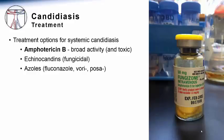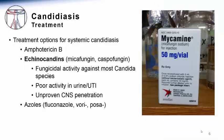Many of the major antifungal agents have potent activity against Candida species. One of the oldest but still used antifungal agents is Amphotericin B, which is active against cell membrane ergosterol and has broad activity against most Candida species. However, it has significant toxicities such as inducing renal insufficiency, and it must be used with caution.